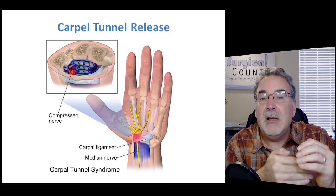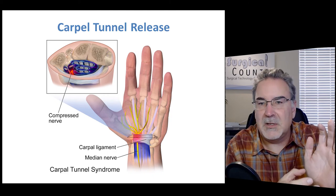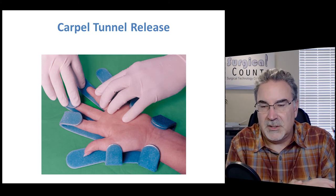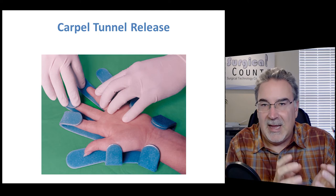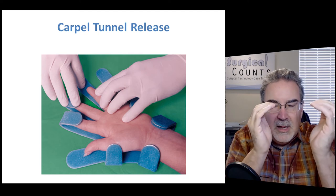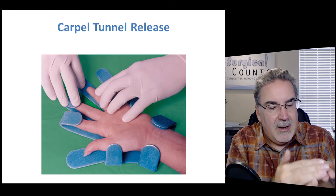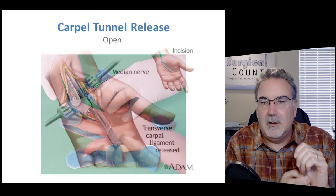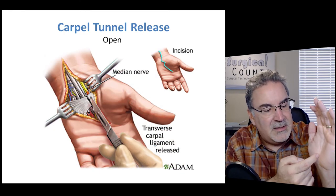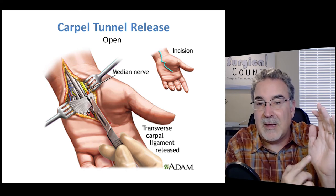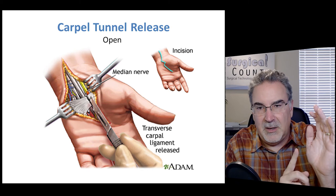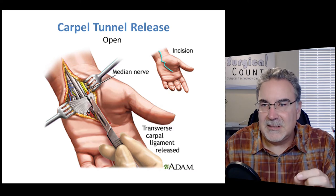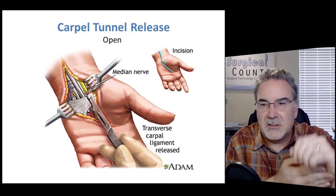Releasing the ligament opens up the tunnel and allows the nerve to expand and work naturally. Often during a procedure like this, the surgeon uses a lead hand — a malleable piece of metal that bends around the fingers to support and hold them open. In the open version of the procedure, the surgeon makes an incision through the wrist, finds the carpal ligament, and simply cuts it, being very careful not to cut any of the tendons or the median nerve underneath. The incision often has a Z-shape to avoid tension on the wrist as the scar heals.